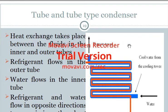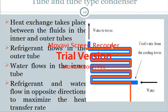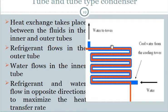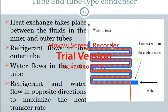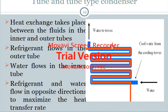The tube-in-tube type condenser follows the same spiral pattern for both the tube and shell. As seen in the figure, the red tube carries the refrigerant and the blue tube carries the water. Heat exchange takes place between the fluid in the inner and outer tubes. The refrigerant flows in the outer tube and water flows in the inner tube, in opposite directions, to maximize heat transfer.